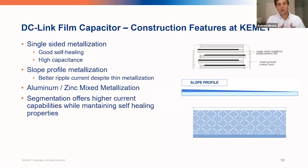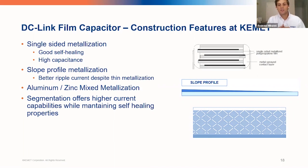Regarding the construction of our film capacitors: we use single-sided metallization, which increases overall capacitance in a given case size and improves self-healing capabilities. We also use slope metallization, which increases and improves ripple current capabilities. We use aluminum-zinc mixed metallization, which improves AC ripple capabilities especially over longer periods of time. We also introduce segmentation, which isolates surface areas from each other — if a self-healing event or discharge occurs, the thin metal will self-heal and evaporate, essentially behaving as a fuse.